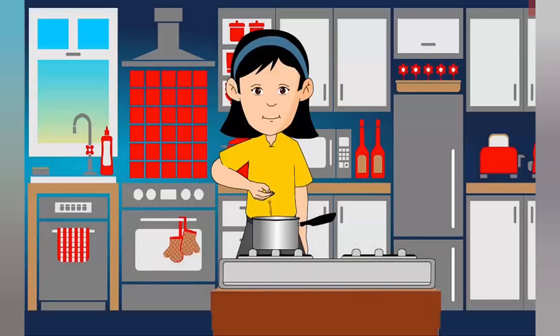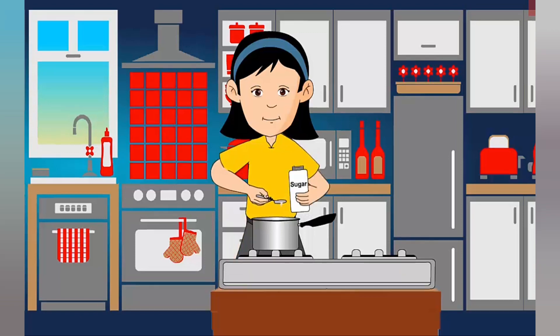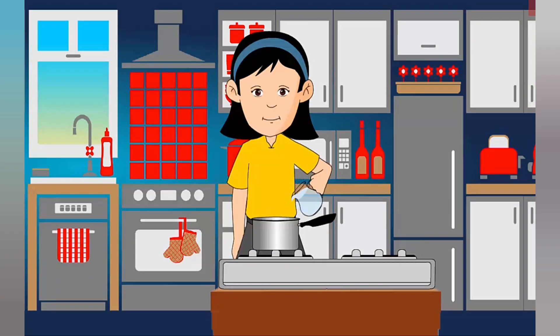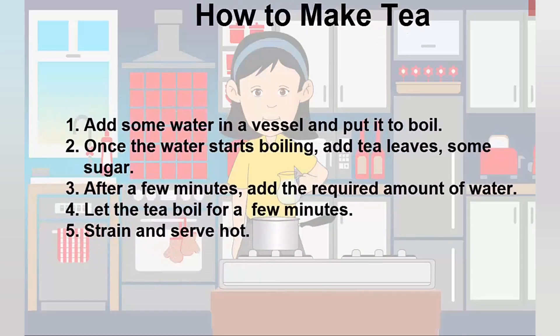Mia is making tea for her mother, but the ingredients she put in the milk were not in the proper order, due to which the tea turned out to not taste good. There is an order to make or do anything. Come, let us learn about the same in this module.